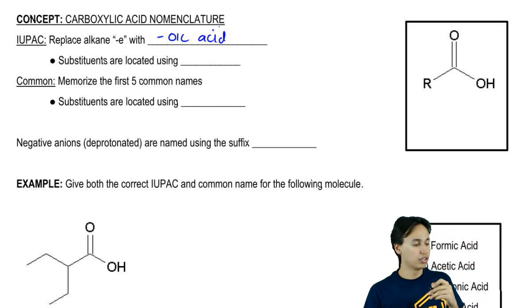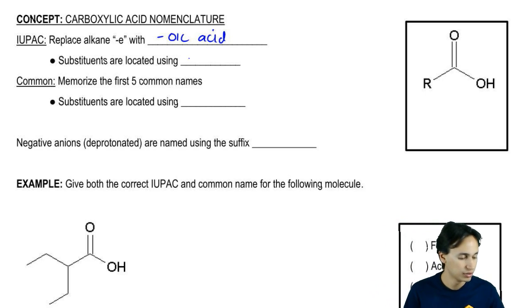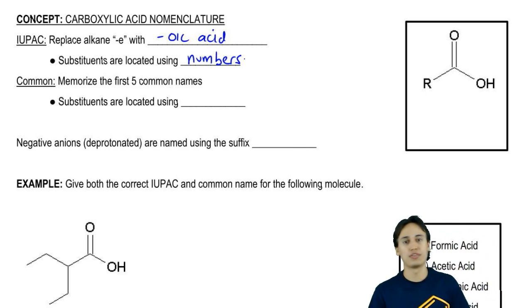Substituents are located using numbers. Same thing we're used to. If you have a 2-methyl group, you would put 2-methyl. Everything is normal.